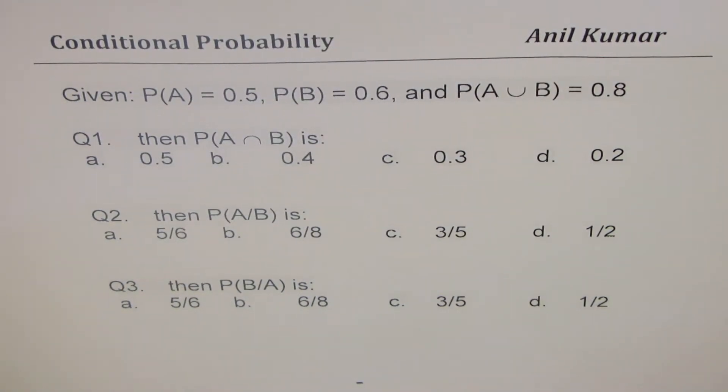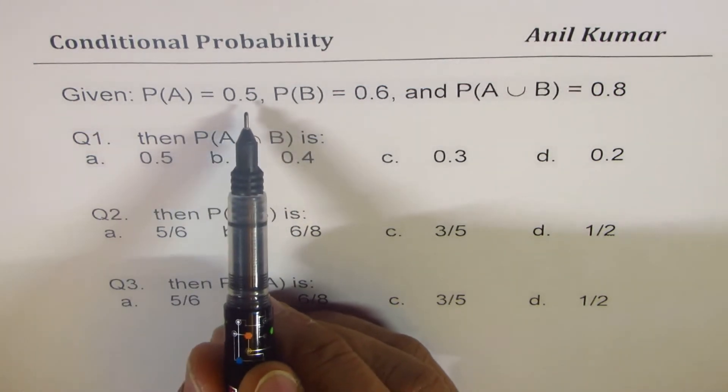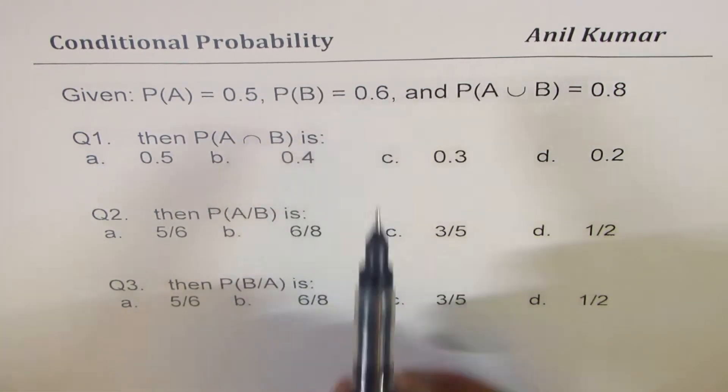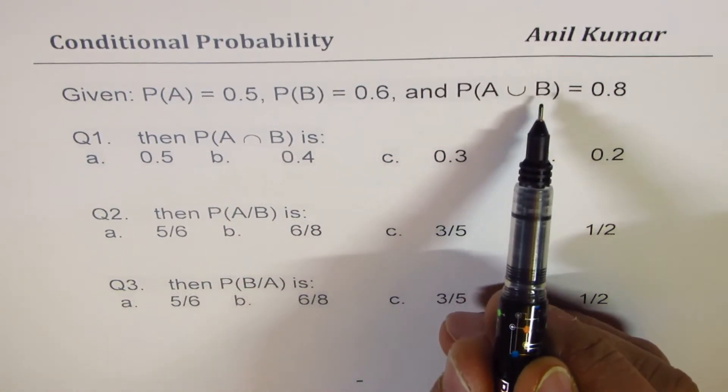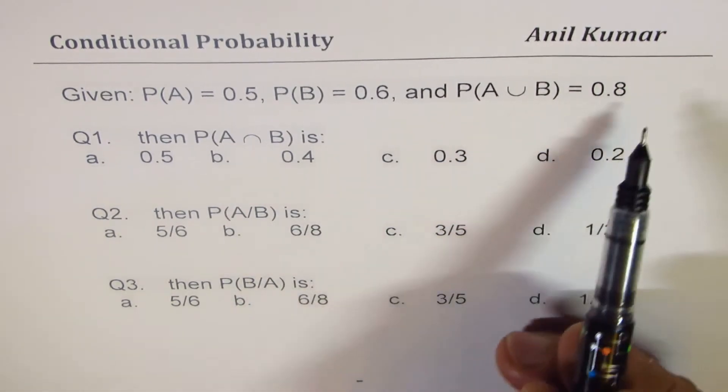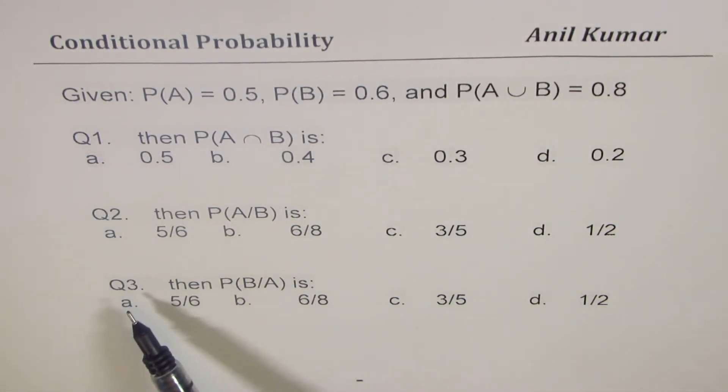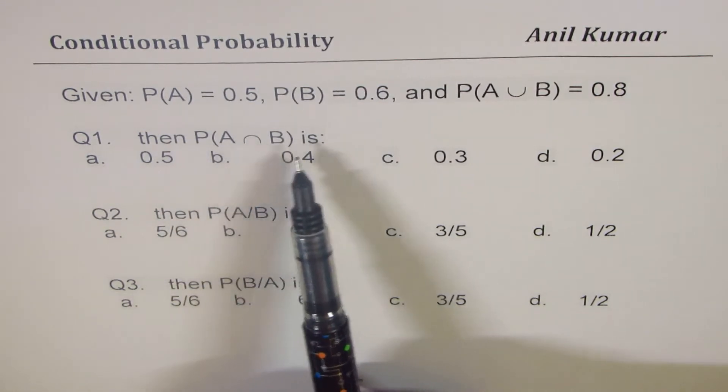I'm Anil Kumar sharing with you a very important question on conditional probability. We are given probability of an event A as 0.5, probability of an event B as 0.6, and probability of event A union B, that means A or B, is 0.8.